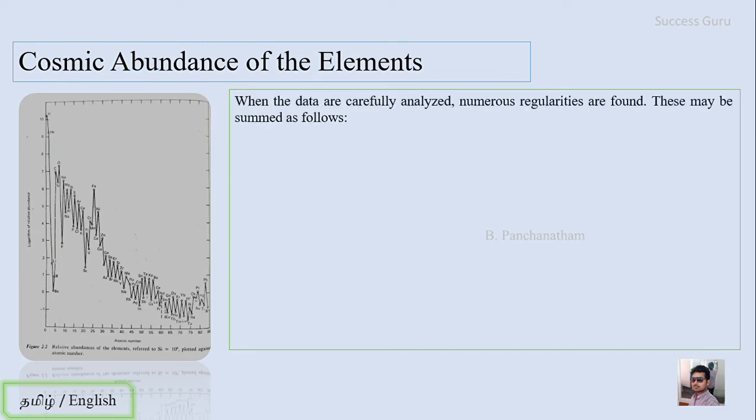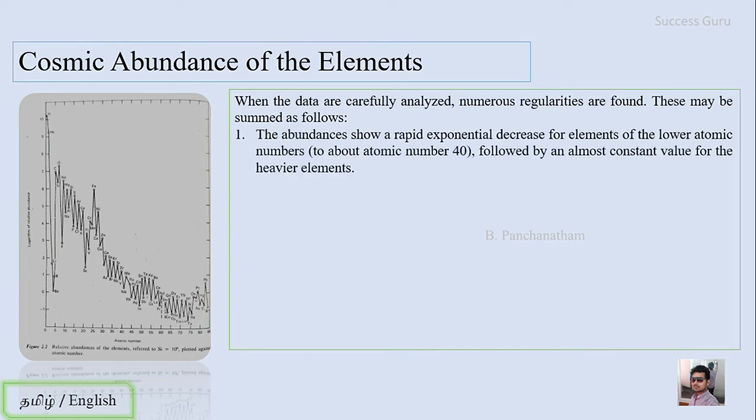When the data are carefully analyzed, numerous regularities are found. The first regularity is that the abundances show a rapid exponential decrease for elements of low atomic number, less than 40, followed by an almost constant value for heavier elements.